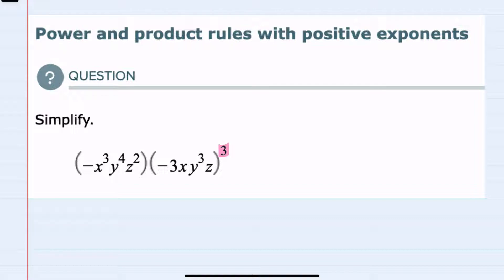So to simplify this expression, I need to first take care of that exponent that's outside the parentheses. The first portion here I can bring down, but then the second portion inside the parentheses...